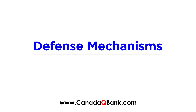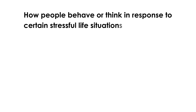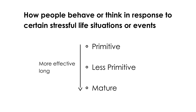Defense mechanisms are essentially how people behave or think in response to certain stressful or traumatic life situations or events. There are about eight I want to go through, and I've broken them up into three categories: the first one is primitive, the next one I've called less primitive, and the final one is mature. As you go down this list, the more mature a defense mechanism is, the more effective it is long term.